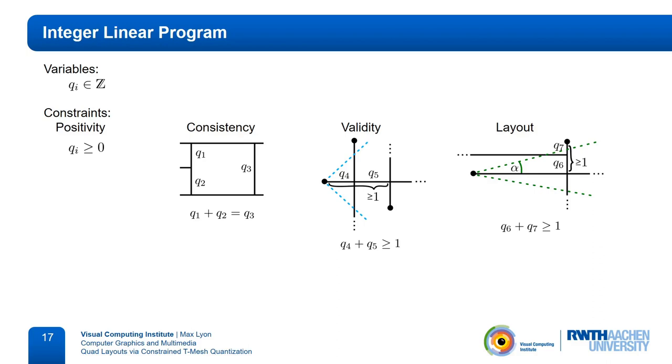Finally, we need to find an objective which promotes coarse layouts. As briefly mentioned in the beginning, it makes sense to compute a quantization as small as possible, since that leads to quad meshes with few elements which we use as coarse quad layouts. Thus, we minimize a weighted sum of the quantization variables.